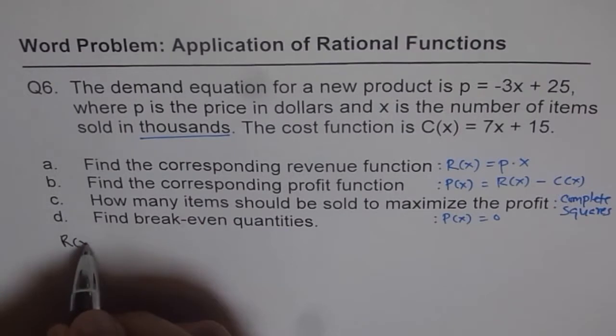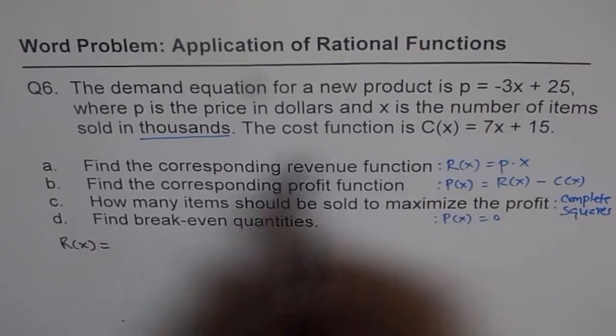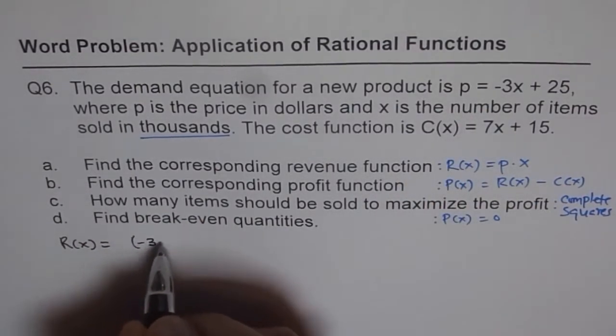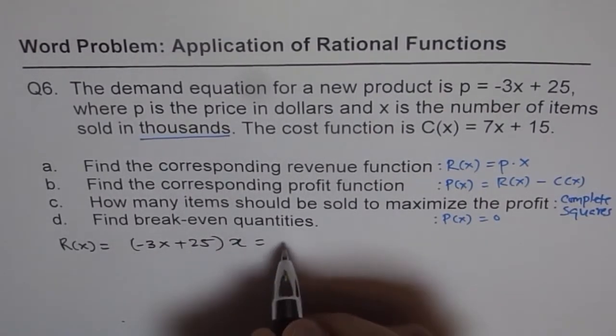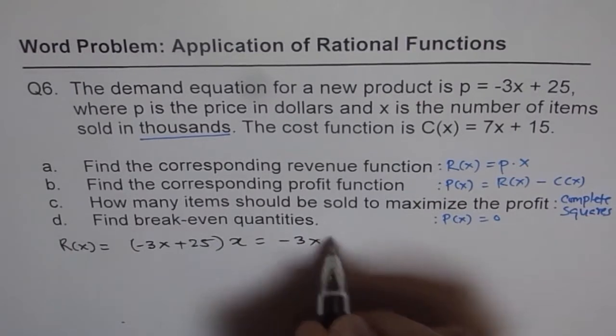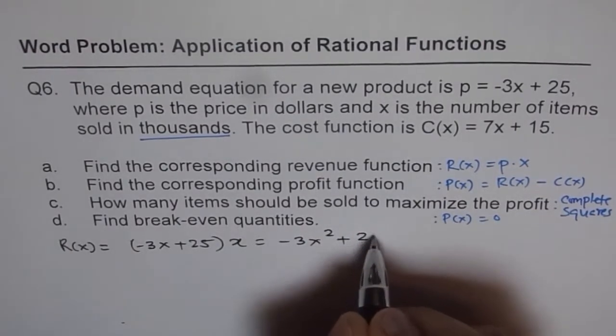Here, revenue is equals to p which is minus 3x plus 25 times x. That gives you a quadratic equation of minus 3x squared plus 25x.